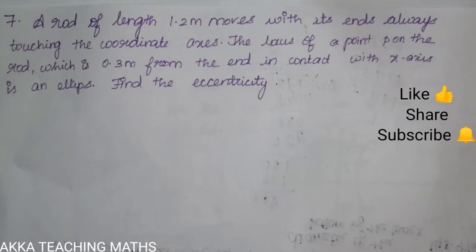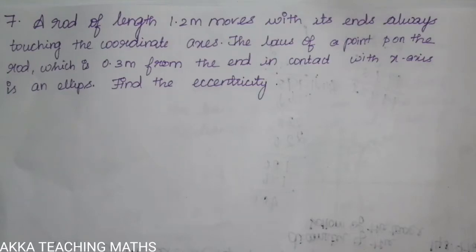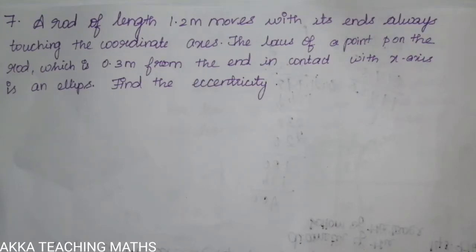Hi friends, welcome to Akka Teaching Max. Seventh question: a rod of length 1.2 meter moves with its ends always touching the coordinate axis. The locus of a point P on the rod which is 0.3 meter from the end in contact with the x-axis is an ellipse.